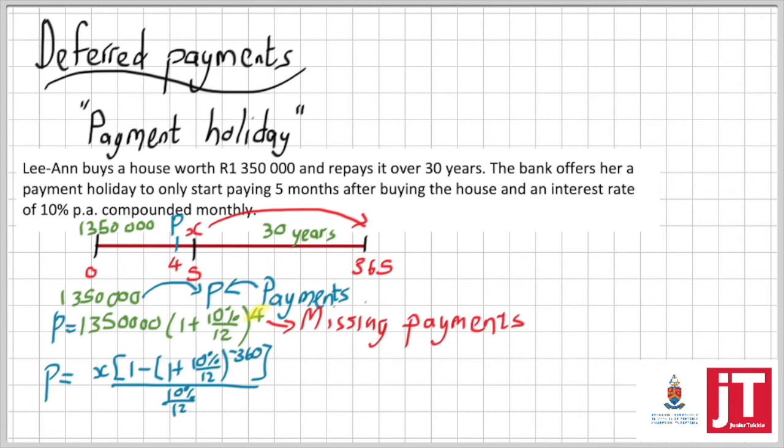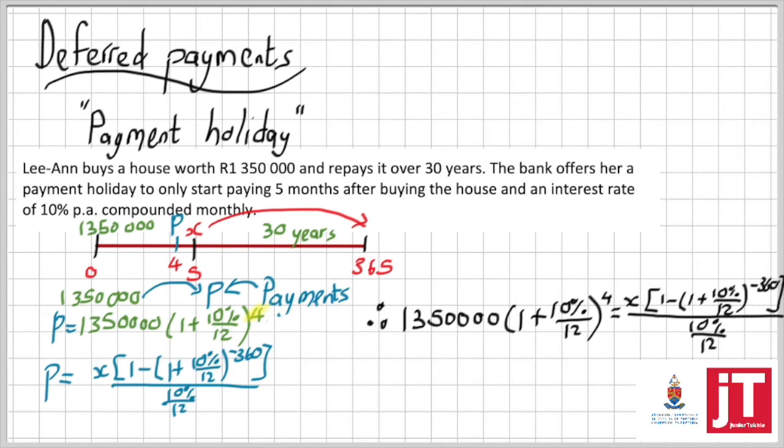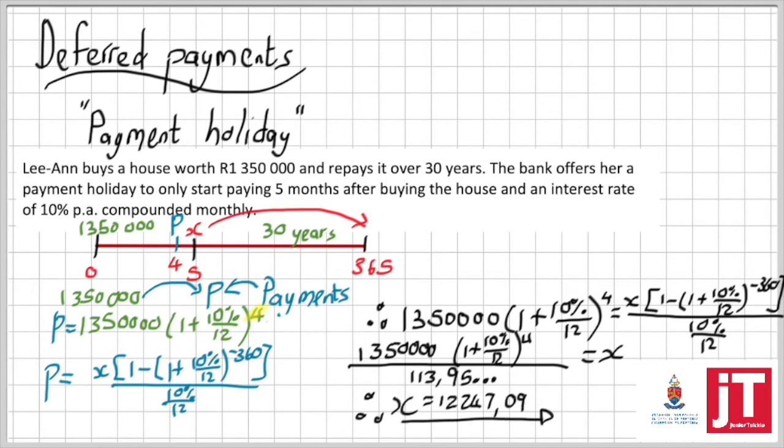So if I go and look at this now, substituting that 1.35 million plus interest into my formula, my formula looks like this. And now again, I've got to calculate x, same as I did previously. So I'm going to jump ahead and skip the step by dividing by the 113.95. Please make sure that you can get this. And this leaves me with an answer for x of 12,247 rand and nine cents.